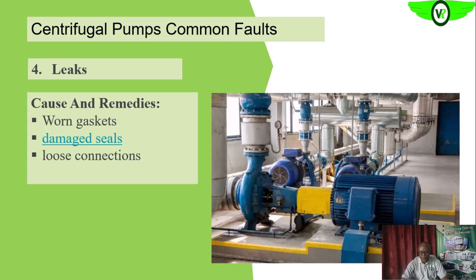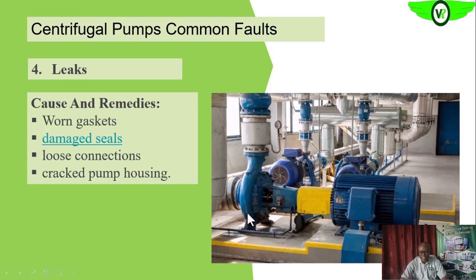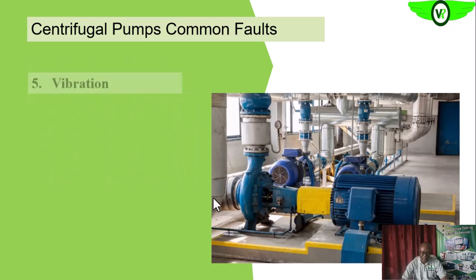Loose connections at flange joints — any loose bolts — can cause leakage that affects the flow rate and the amount of fluid delivered to the process. A cracked pump housing is also a cause: since the fluid pressure is elevated inside, it will leak out of cracked points. If there is a crack, it can be sealed temporarily until the pump can be replaced or a replacement installed. Those are the main causes of leaks in a centrifugal pumping system.